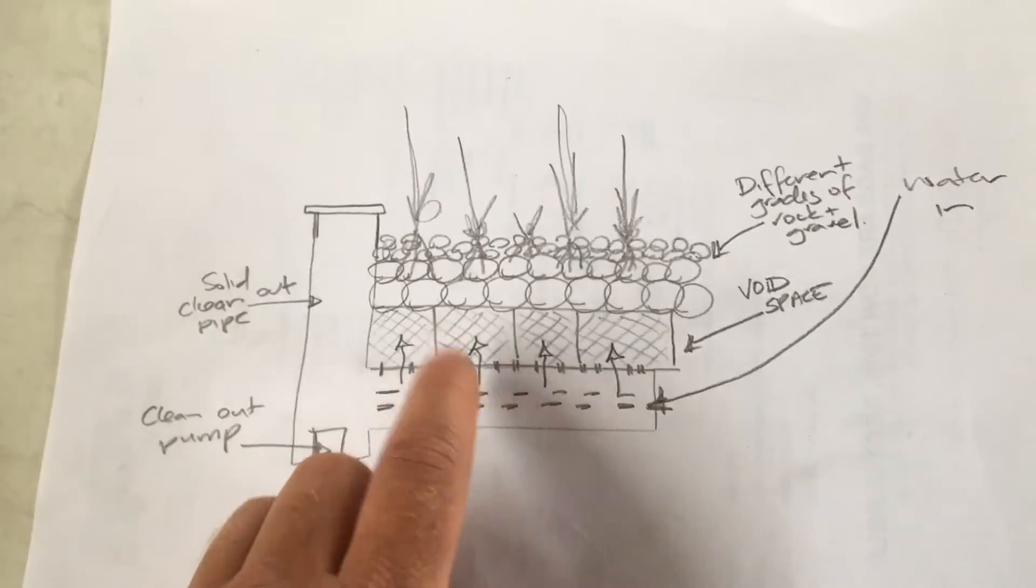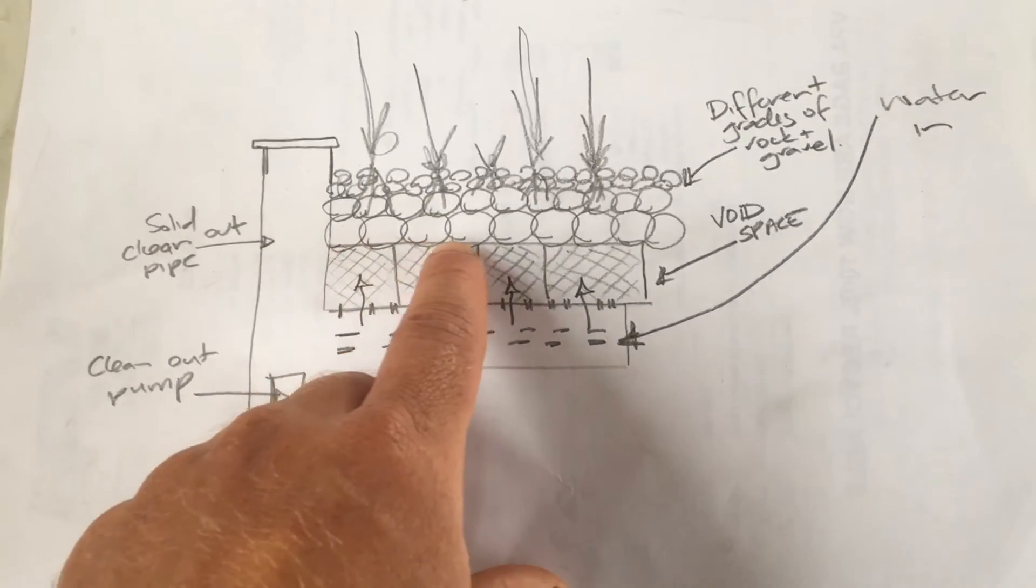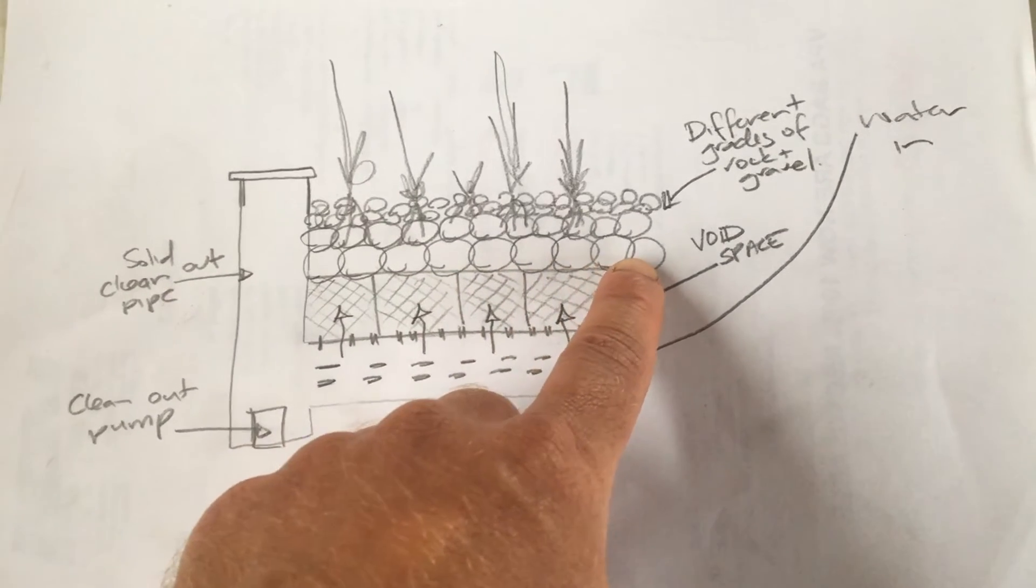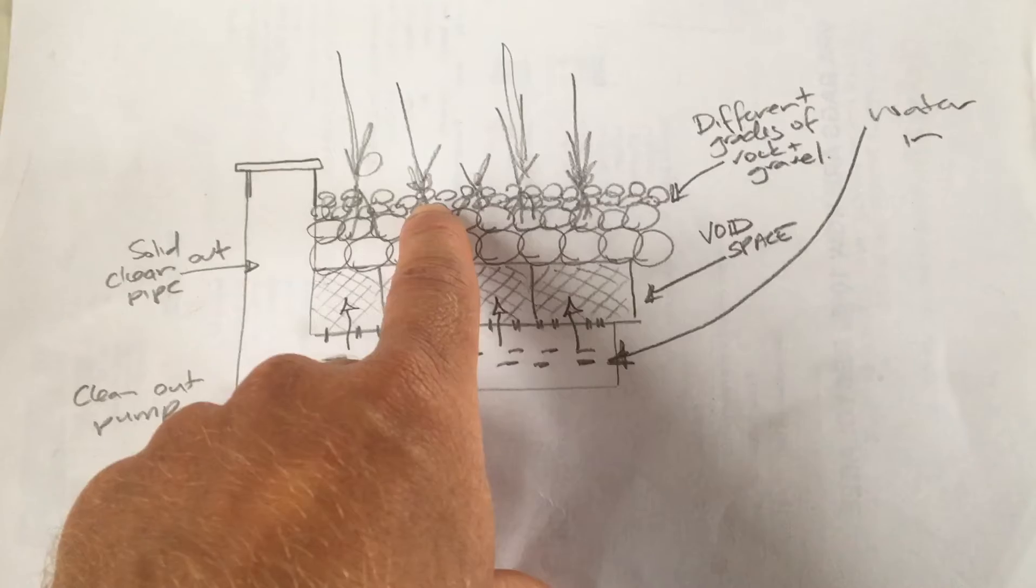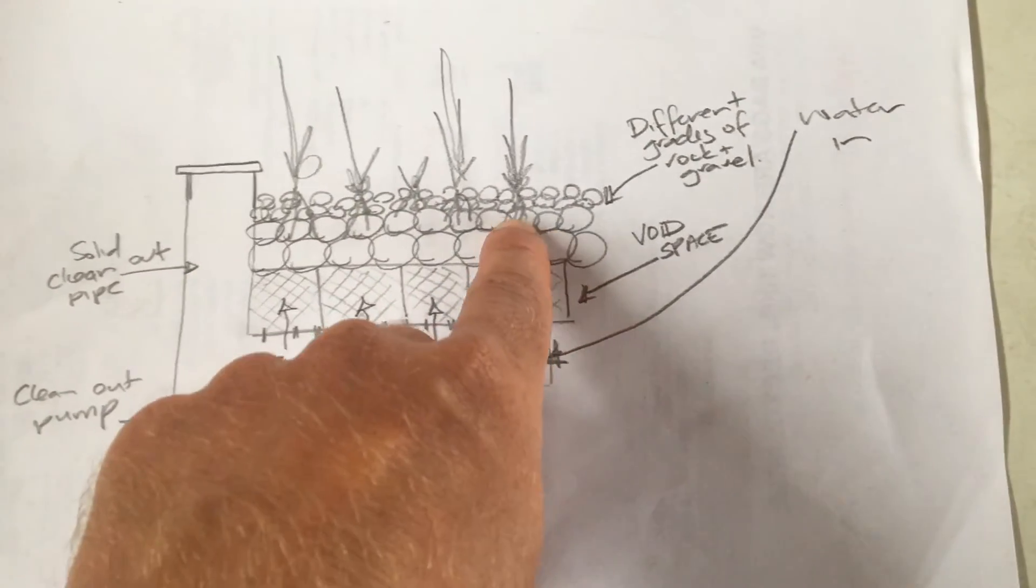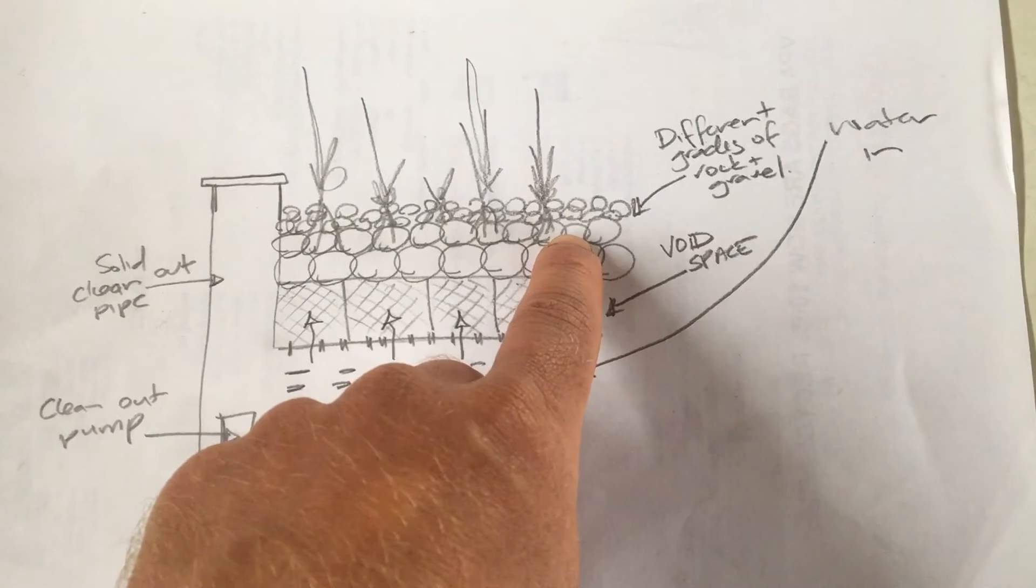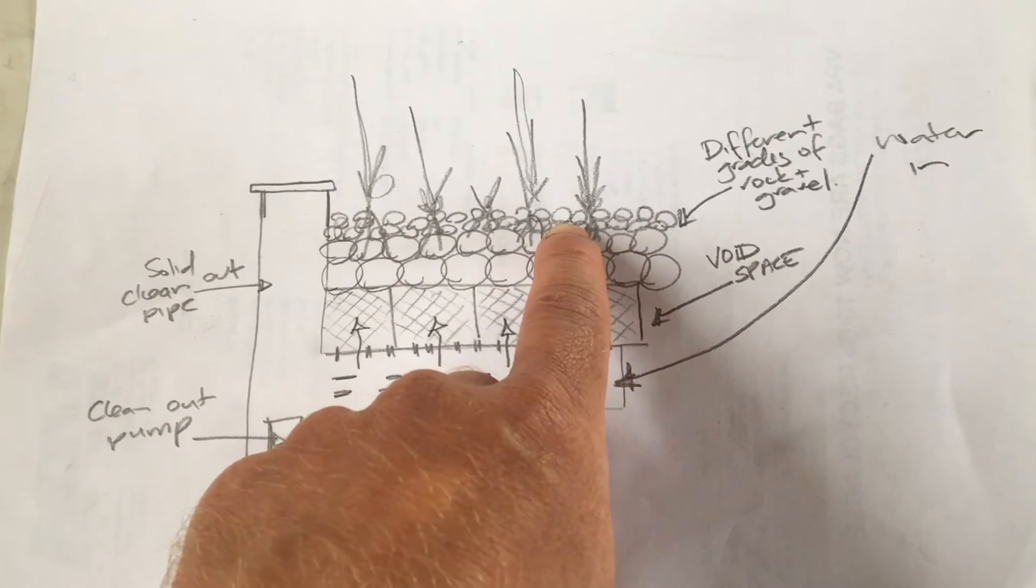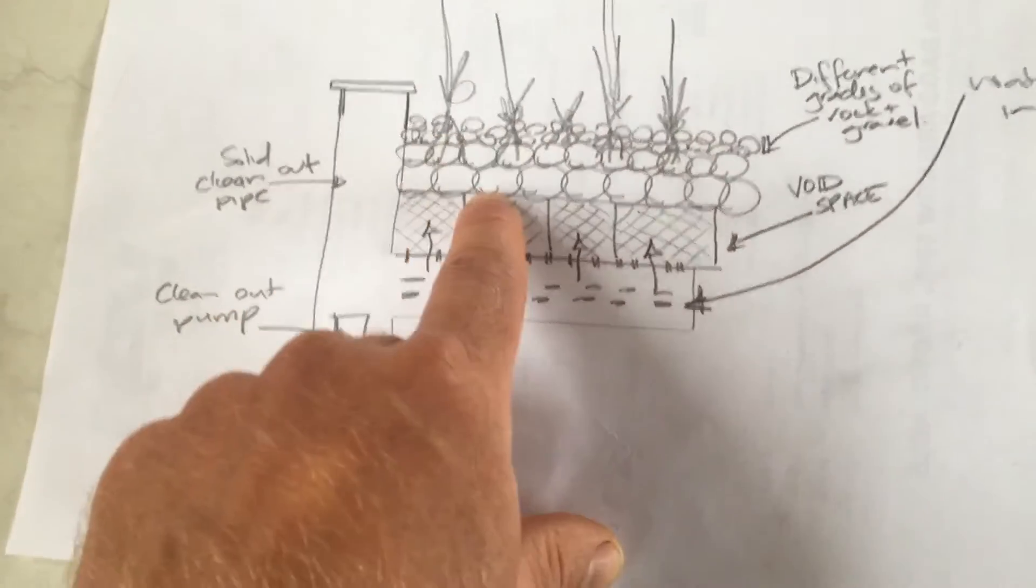It also makes it easier to clean out. On top of this you've got large rock, then you've got medium rock, then you've got small rock. Now the depth on each of these rocks is about 20 centimetres of big rock, 20 centimetres medium rock, 20 centimetres small rock and then your plants go up here in the small rock.